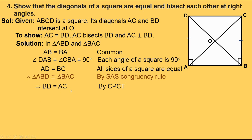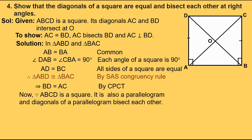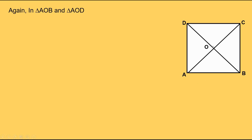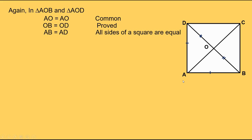So we proved that diagonals are equal. Now, since ABCD is a square, it is also a parallelogram, and diagonals of a parallelogram bisect each other. Therefore, AC bisects BD. This implies OA equals OC and OB equals OD. Again, in triangle AOB and triangle AOD: AO equals AO (common), OB equals OD, and AB equals AD since all sides of a square are equal. Therefore, triangle AOB is congruent to triangle AOD by SSS congruence rule. This implies angle AOB equals angle AOD by CPCT.